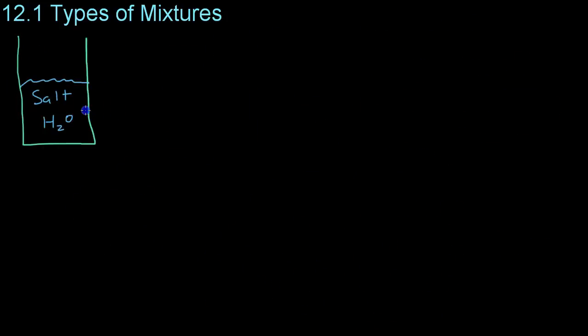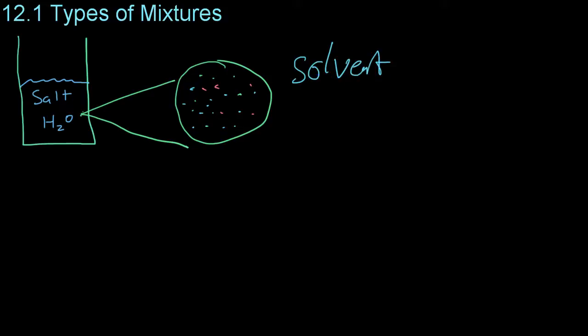So now just to go over some vocabulary, if we blow up this picture of salt water just a little bit, you'll remember we have some chlorine ions and some sodium ions floating around in a solution of water. Now, within this mixture of salt and water, there are two components. One is known as the solvent and the other is known as the solute.